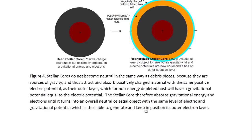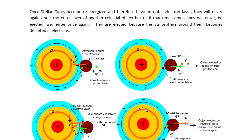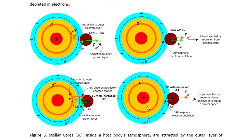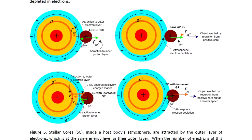Once stellar cores become re-energized and have their own outer electron layer, they never come in again. But until then, they will come in over and over again. They are ejected once the atmosphere around them becomes depleted in electrons. This is illustrated in the diagram where you see a stellar core — a low gravitational potential stellar core, like when it first comes to Earth. It is attracted to the electron layer, the outer electron layer represented by the blue ring. So it is the electrostatic interaction that brings it in, and this electron layer is at the appropriate energy level for the material on the surface of the stellar core.